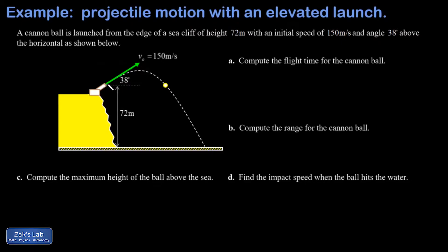The prep work we normally do before anything else is to break that launch velocity into its components. The x component is 150 cosine of 38°, which gives about 118.2 meters per second. So the projectile is moving that fast to the right. Simultaneously it's moving up, and that component is given by 150 sine of 38°, which is about 92.3 meters per second.